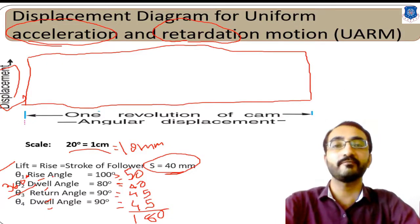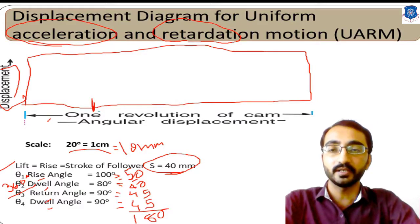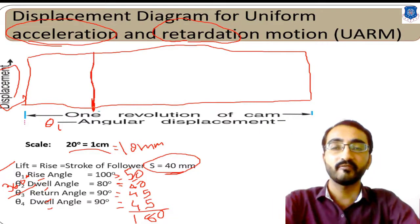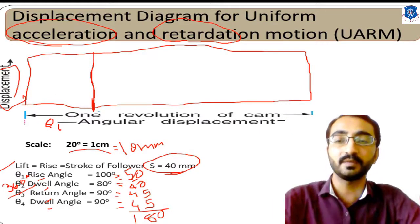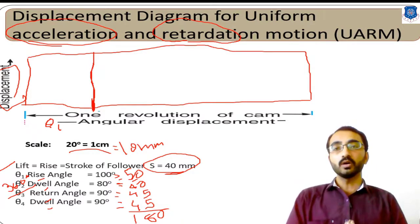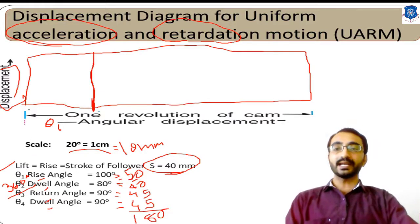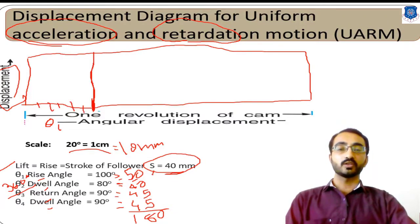Phase 1 — theta 1 for the rise angle — is represented by 50 mm. Divide this first division of 50 mm to represent theta 1 phase, extending the line to form the first rectangle representing the rise angle or outstroke. In the uniform acceleration and retardation method, divide this horizontal line into 6 equal intervals — 1, 2, 3, 4, 5, and 6 — giving equal divisions of 10 mm each (50 mm divided by 5).